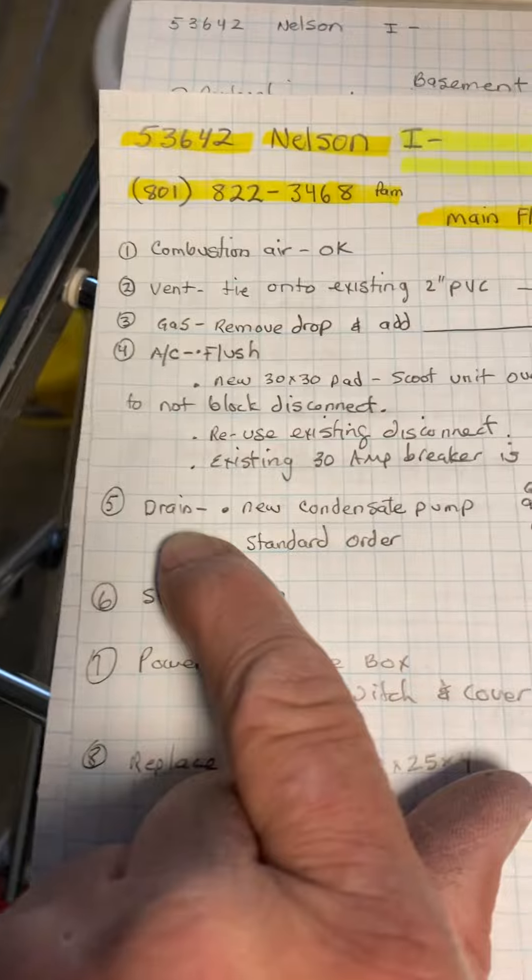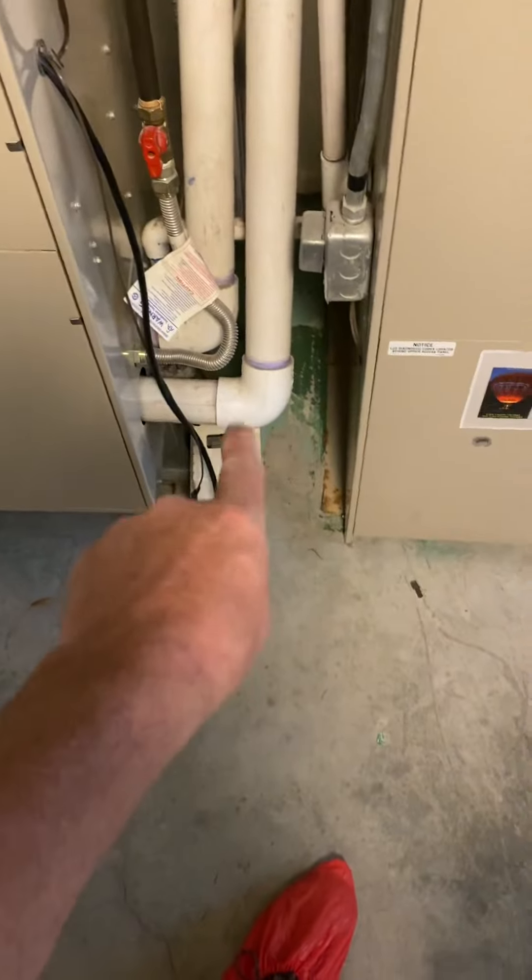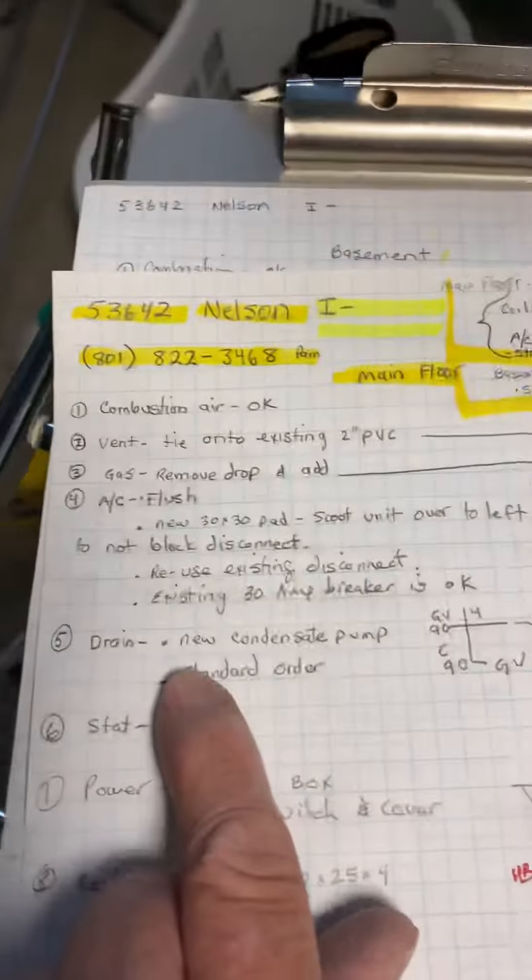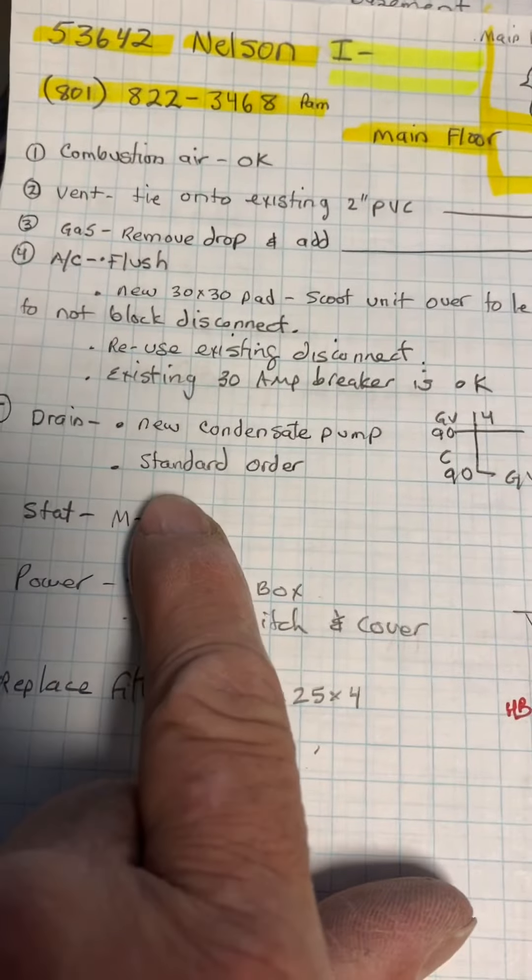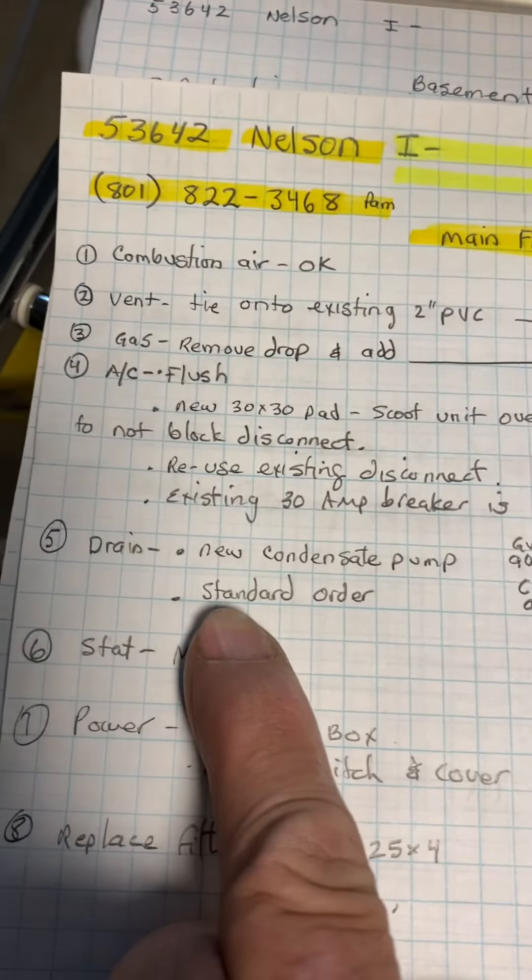AC I'll go over in a minute. The drain, we're going to put in a new condensate pump and it just pumps to the back right there. They do have a floor drain so we don't need overflow switches, but I'm guessing they didn't want it in front of their washer and dryer.